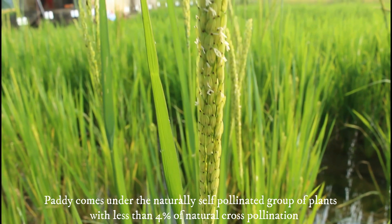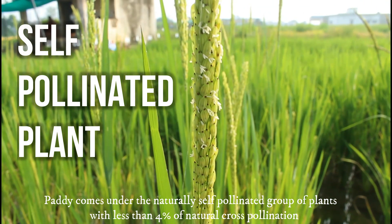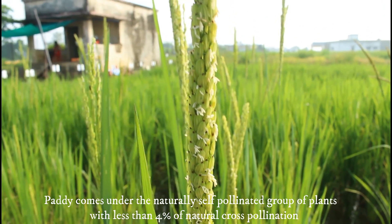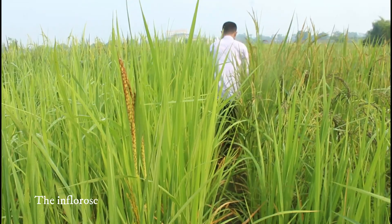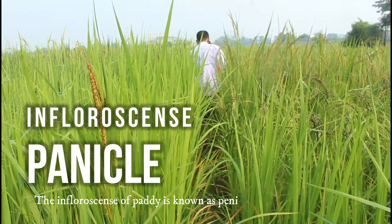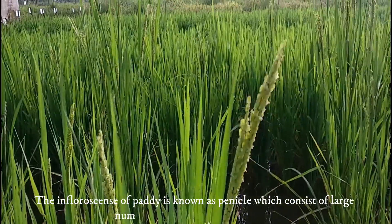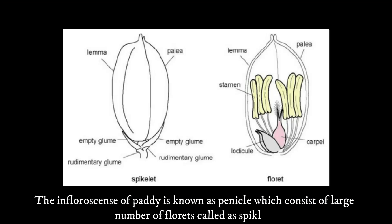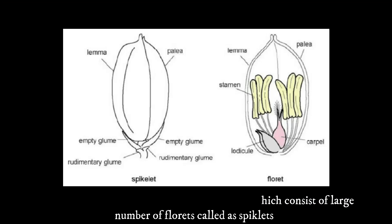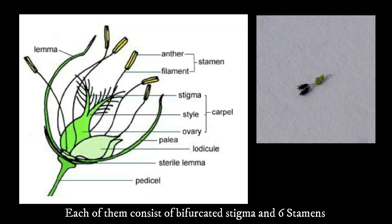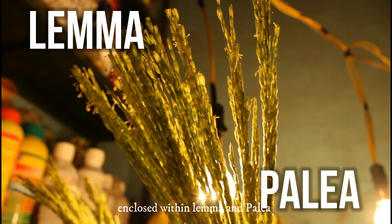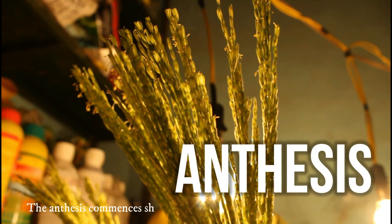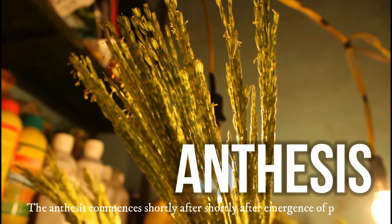Paddy comes under the naturally self-pollinated group of plants with less than 4% of natural cross-pollination. The inflorescence of paddy is known as panicle, which consists of a large number of floral units called spikelets. Each spikelet consists of a bifurcated stigma and six stamens enclosed within lemma and palea. The anthesis commences shortly after the emergence of the panicle.